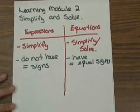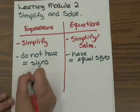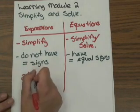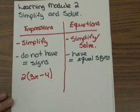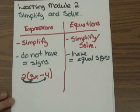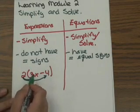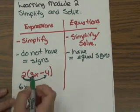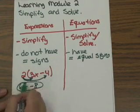Let's see what they look like. An expression would be something like 2 times (3x minus 4). That's an expression — notice there's no equal sign, so there's no reason to try to solve. The only thing you can do is simplify. You distribute the 2 to the 3x and the negative 4, getting positive 6x and negative 8. This expression has been simplified.